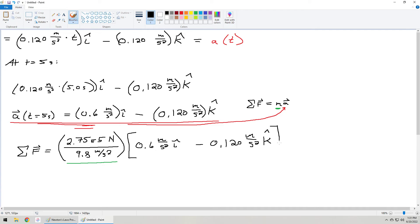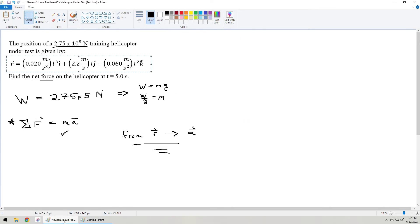Okay. And now, what we have to do is multiply that scalar value by this vector value. 0.6 meter per second squared i-hat minus 0.120 meter per second squared k-hat. So, we're almost done. We just have to multiply these two things together. And so, if I take 2.75 e to the 5 divided by 9.8 and I multiply that value times both of the components of that acceleration vector, here is what I get. I'm going to answer it to two significant figures.